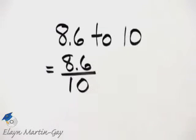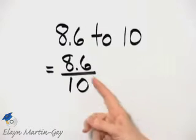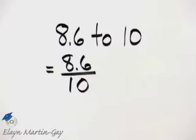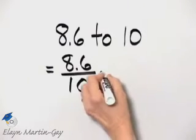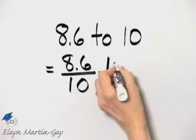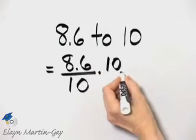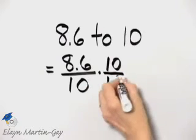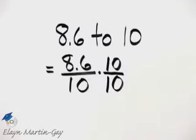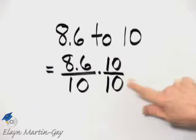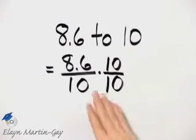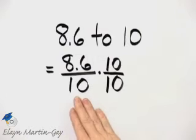If I multiply the numerator by 10—remember that moves the decimal point one place to the right—it will no longer be a decimal number. If I do that, I must multiply the denominator by 10 also, because this is the same as multiplying by 1, so I'm not changing the value of this ratio or fraction.